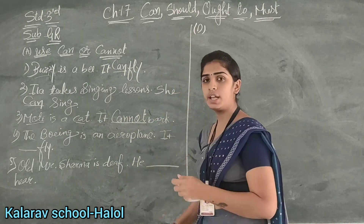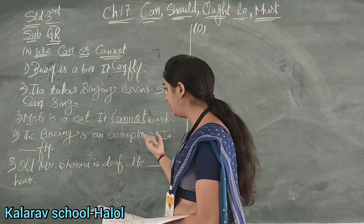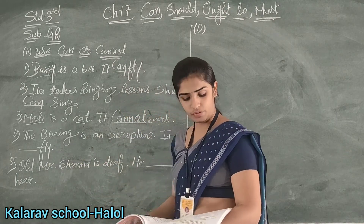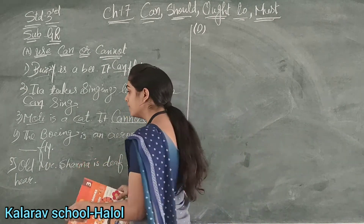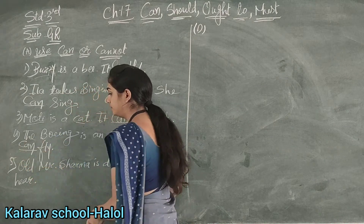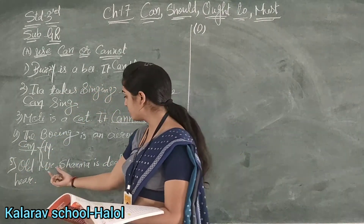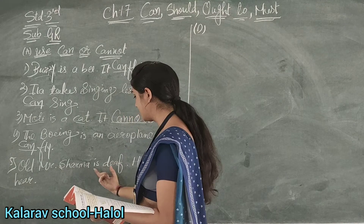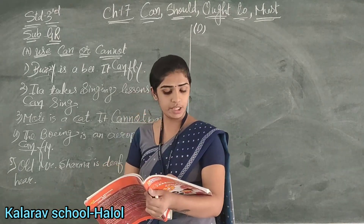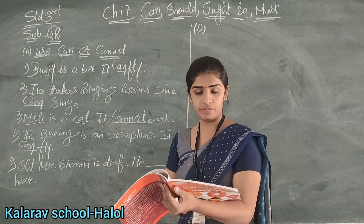Clear? Next: The Boeing is an aeroplane. It dash fly. Can an aeroplane fly? Obviously yes. So the fourth answer is: can. Now fifth number: Old Mr. Verma is deaf. He dash hear. Deaf means — what is the meaning of deaf?